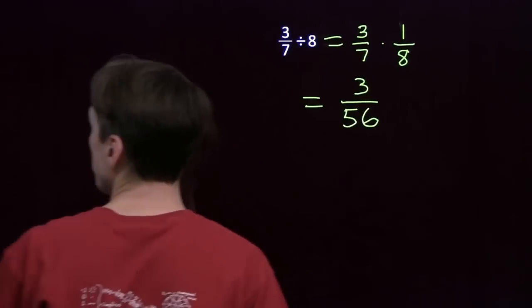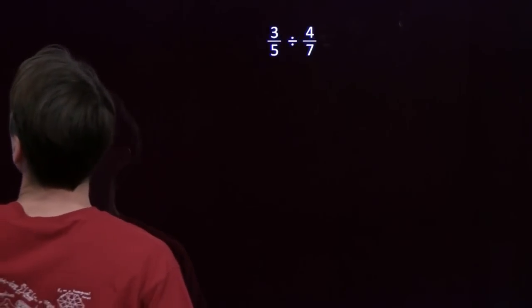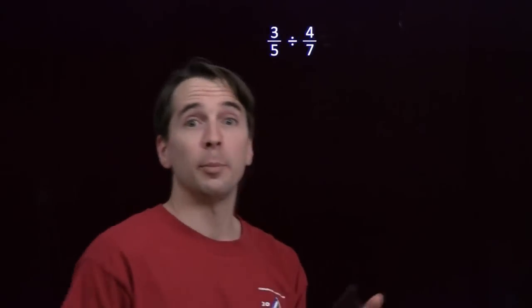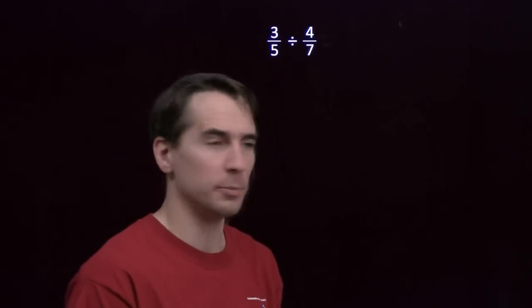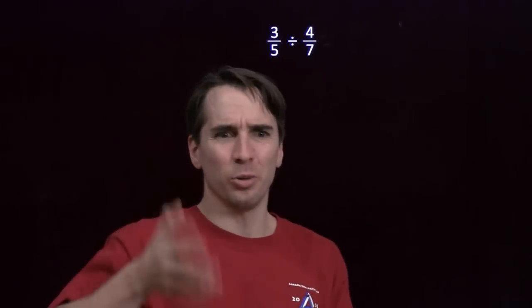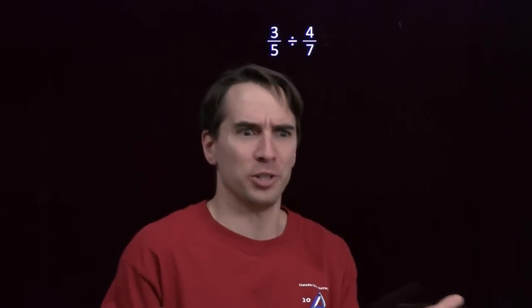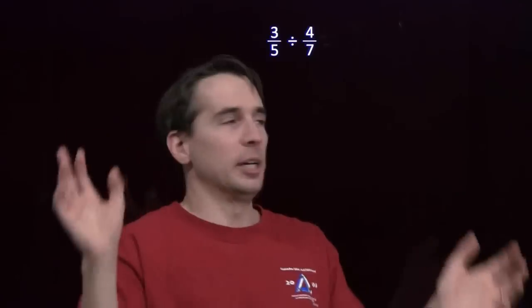Let's move on to dividing one fraction by another fraction. All right, here we've got 3/5 divided by 4/7. And now we see why it's really good that we have a rule for division, because what does it mean to take 3/5 of something and divide it up into 4/7 boxes? That doesn't even make any sense.